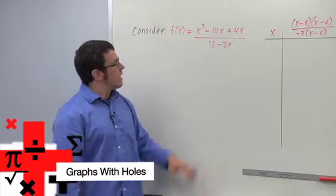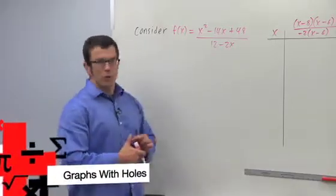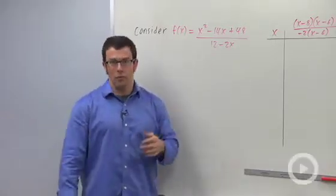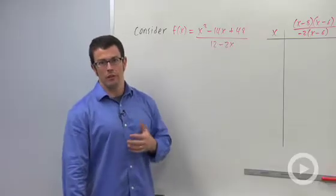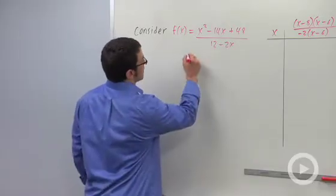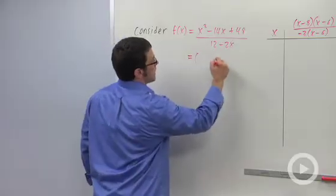We're talking about rational functions, and I have one here. Usually when we're analyzing the graph of a rational function, we like to have the numerator and denominator factored. So let me do this just to figure out what's going on with this rational function.